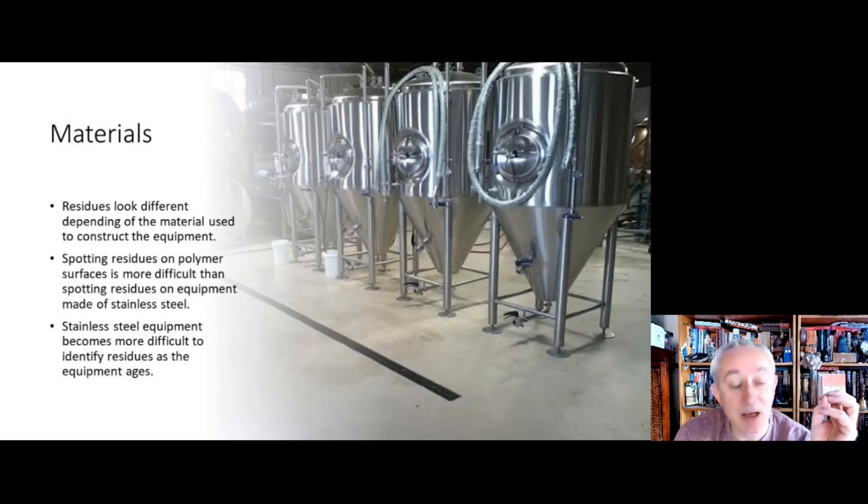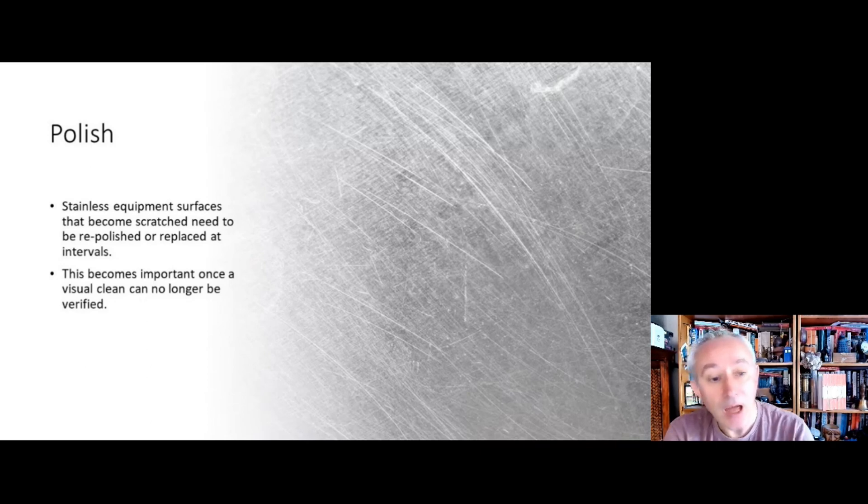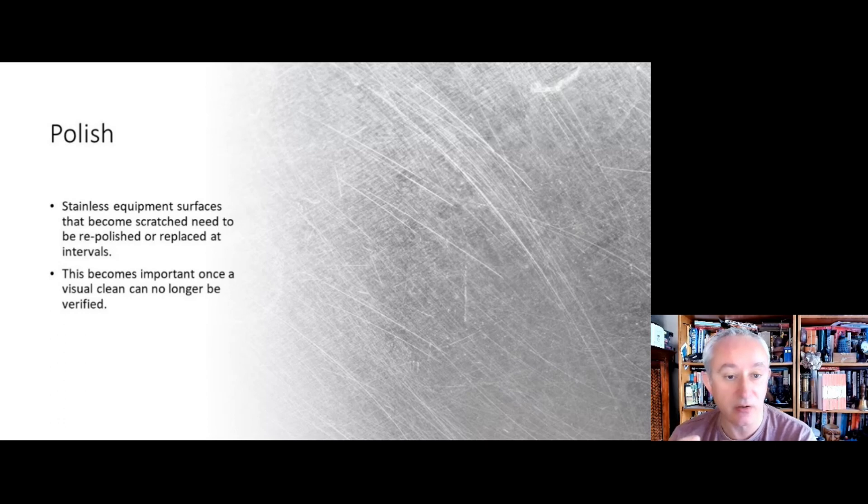We also need to be mindful that as a surface ages, it becomes harder to spot the residues as well. Older stainless steel is harder to see those residues than it is with nice brand-new super shiny stainless steel. It's also important when we're doing the inspections that we don't have stainless steel that looks like it does on the slide.